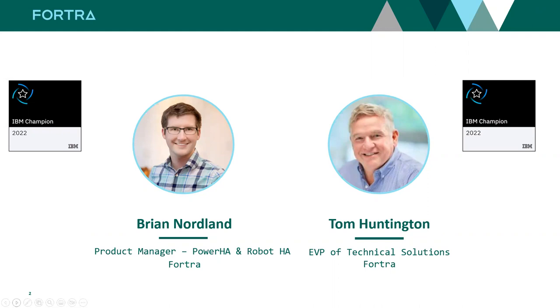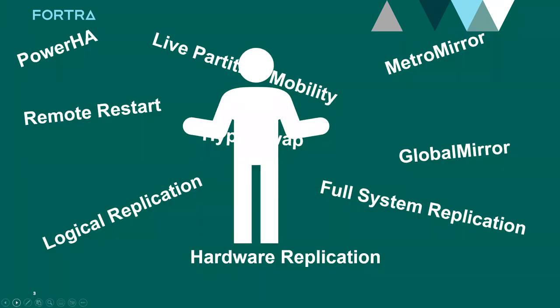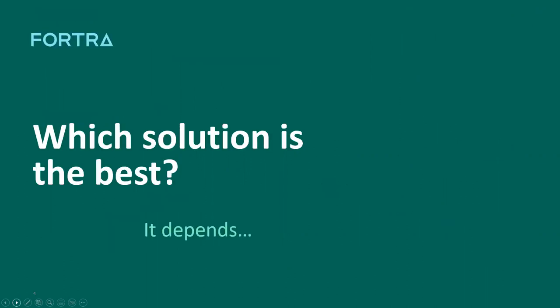It's exciting to be here again with Common, and I just want to throw a shameless plug out there for the Power Up event coming in April in Denver. If you haven't signed up, please do. Both Brian and I will be out there on behalf of Fortra. Today's topic is all your different options for high availability and DR on the IBM i platform. We'll talk about Power HA, Live Partition Mobility, Metromere, GlobalMere, Full System Replication or FSR, Hardware Replication, and Logical Replication.